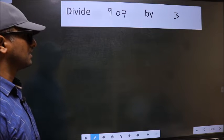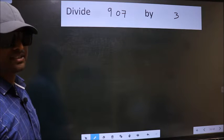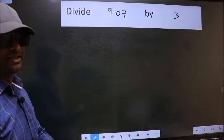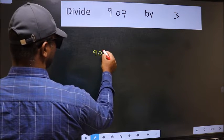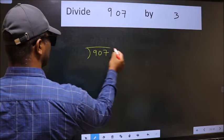Divide 907 by 3. To do this division, we should frame it in this way: 907 and 3 here.